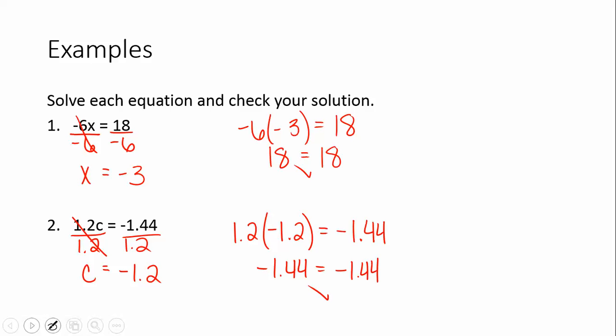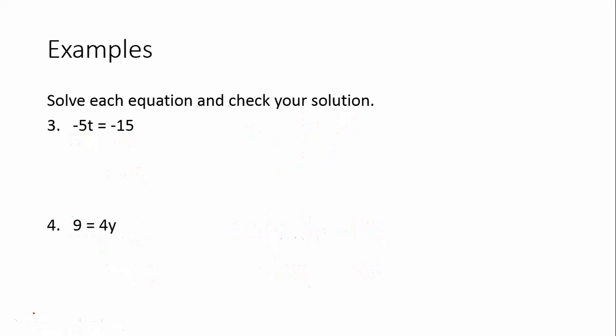When solving equations, there's really no excuse to get it wrong because you can always plug your answer back in to check. A couple more examples — you can pause the video and try these on your own. We need to divide by negative 5 on both sides, and we get T equals 3. We need to divide by 4 on both sides, and we get Y equals 9 over 4. This does not reduce, and you do not have to change it to a mixed number, so you can leave it as 9 over 4.